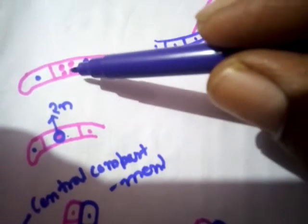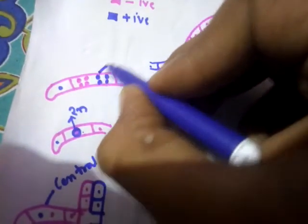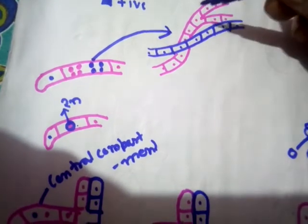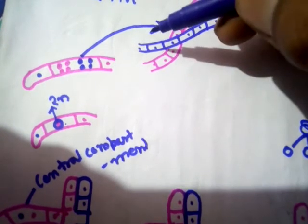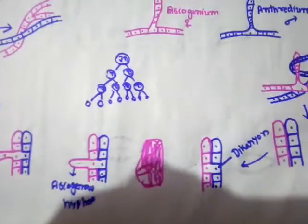This diploid zygote nucleus in the central compartment undergoes first a meiotic division and then a mitotic division. The meiotic division results in four haploid nuclei, and each haploid nucleus then undergoes one mitotic division, giving a total of eight haploid nuclei. Each nucleus gets surrounded by cytoplasm and membrane, forming a spore — these spores are called ascospores. This central compartment is now the ascus, producing eight ascospores in total: half of positive strain (blue) and half of negative strain (pink). When the ascus matures, ascospores are discharged and develop into mycelium.